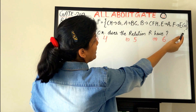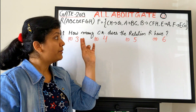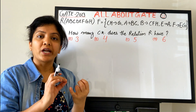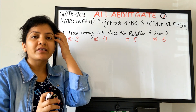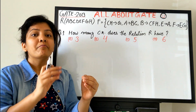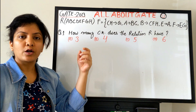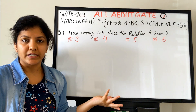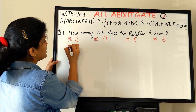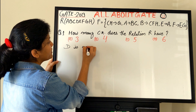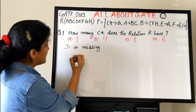D is not part of the given functional dependency set, which simply means whatever keys are formed, D will have to be augmented. D cannot be found from any closure of attributes because it's not present in any FD. So whatever set of attributes can determine all of R minus D, we augment D to it to form a candidate key.